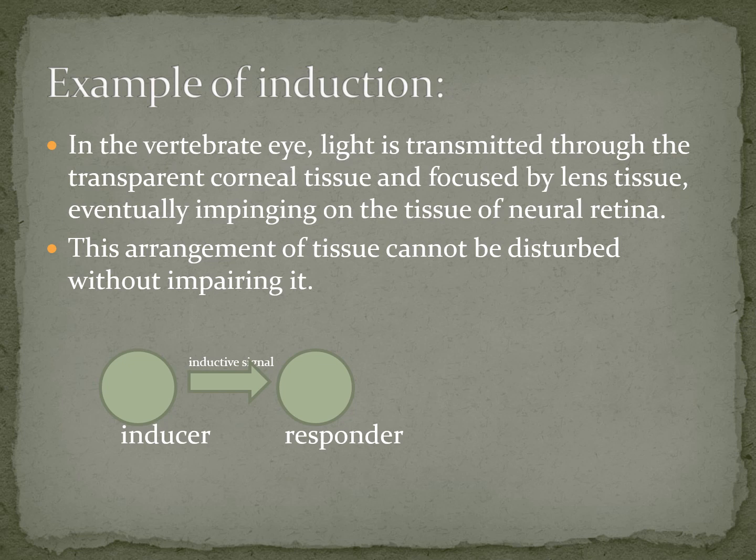An example of induction: light is focused on the cornea. The cornea helps to focus light, which is produced by the lens tissue. In this case, the cornea is the responder and the lens is the inducer. In the vertebrate eye, light is transmitted through the transparent corneal tissue and focused by the lens tissue, eventually impinging on the tissue of the neural retina, and the retina converts it into visual form.